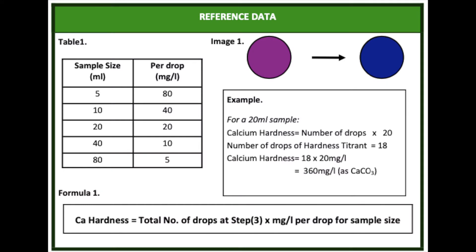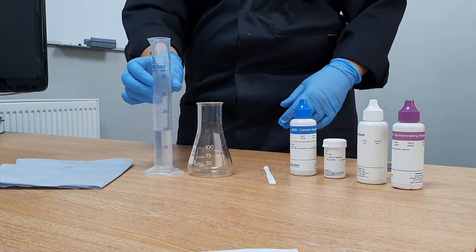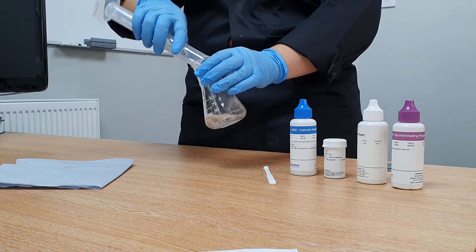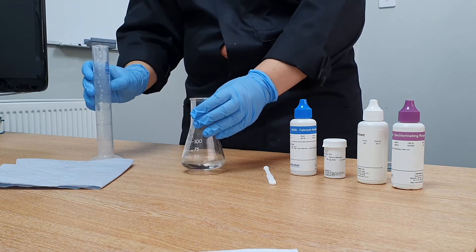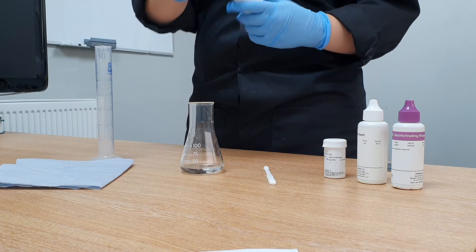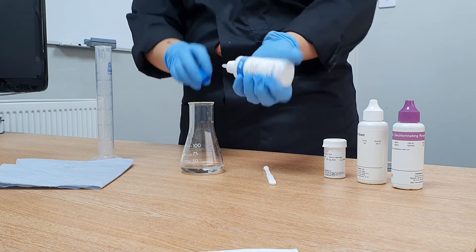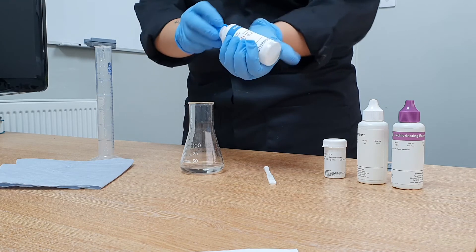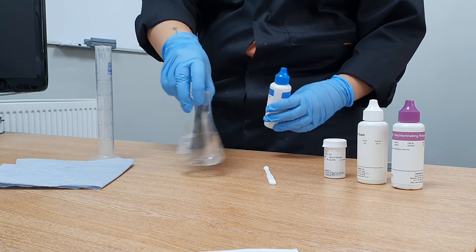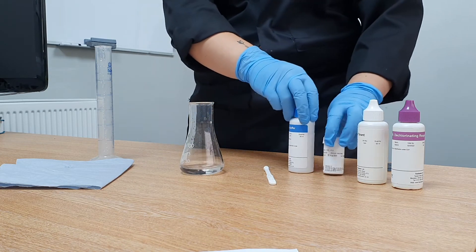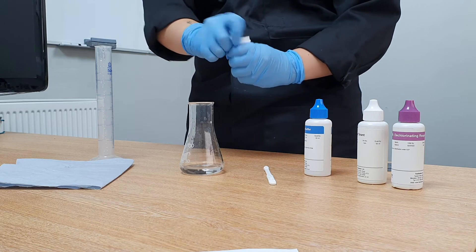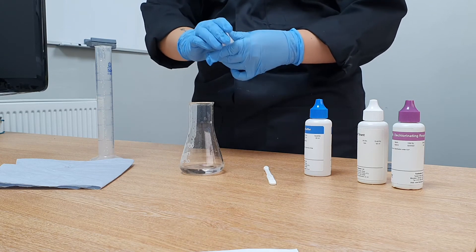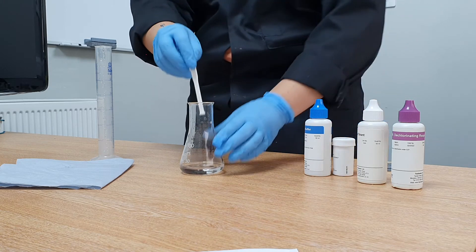Select an appropriate sample size based on the required mg per litre per drop of hardness titrant, and filter the sample if necessary. In this demonstration we will be using a 20ml sample. Add 5 drops of calcium hardness buffer per 20ml sample, and 1 calcium hardness indicator tablet. Crush and swirl to dissolve.